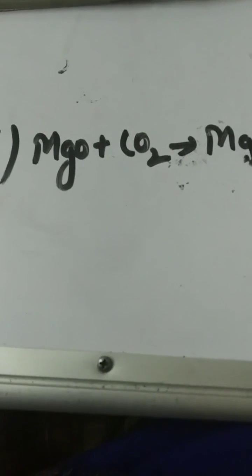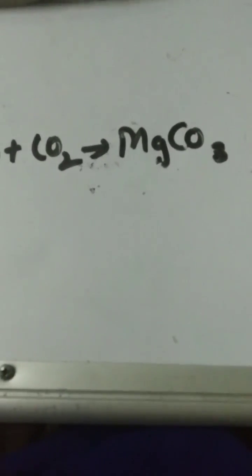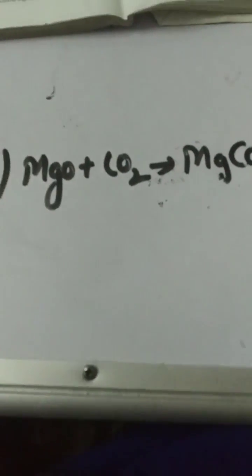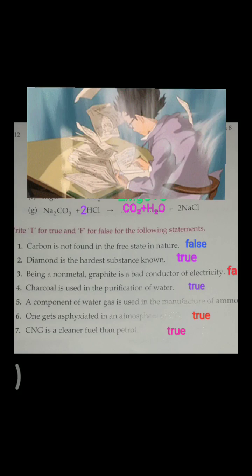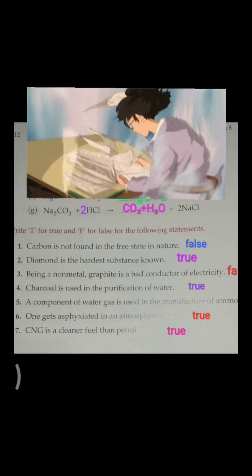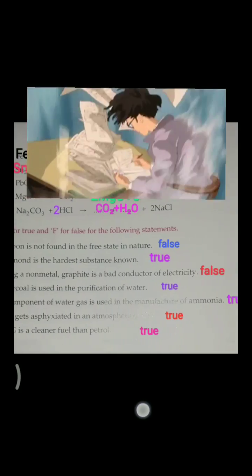F part: MgO plus CO2 gives rise to MgCO3. Sodium carbonate reacts with HCl to give rise to carbon dioxide, water and NaCl, and we will place 2 coefficient in front of HCl.